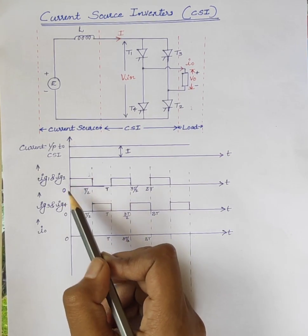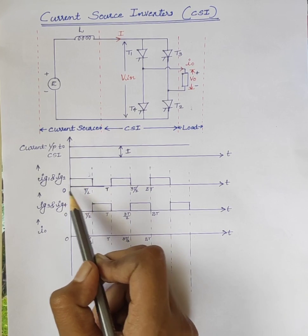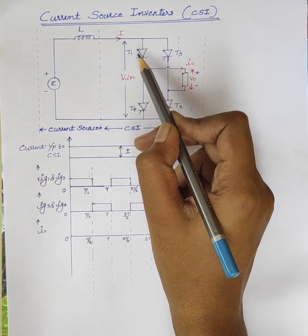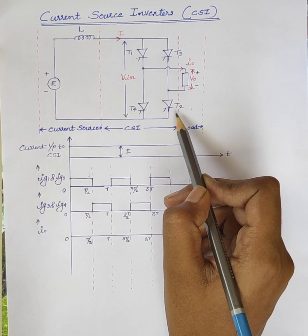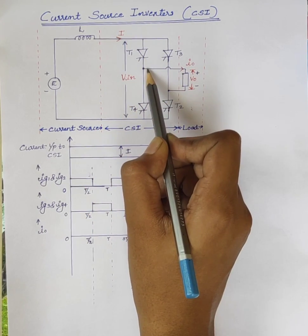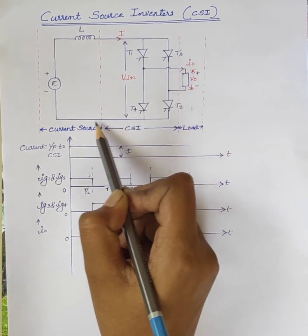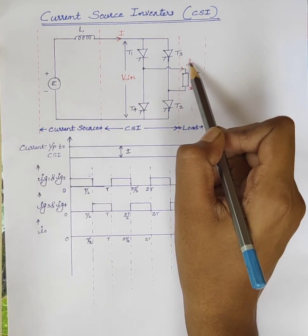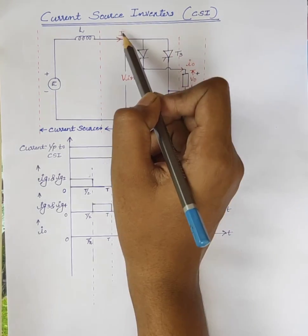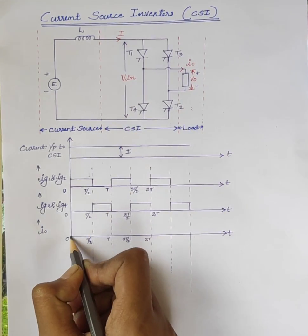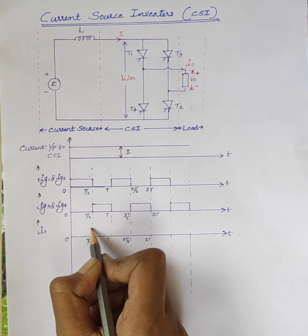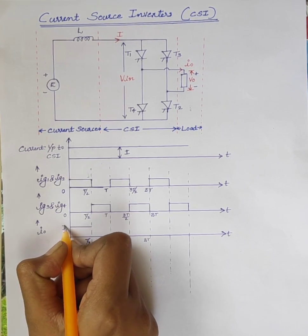During the first half cycle, that is from 0 to T/2, firing pulses are given to thyristors T1 and T2. So the current flows through the path T1, load, T2, back to source. So the direction of current is positive and equal to I. From 0 to T/2, the output current I0 is plus I, so magnitude is I.